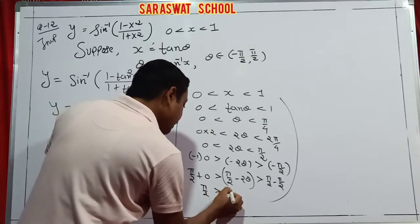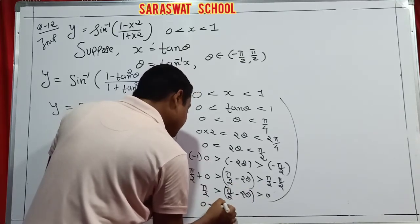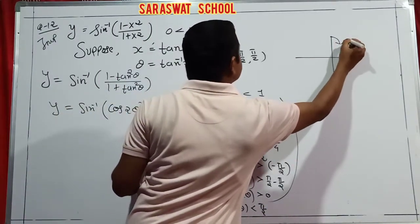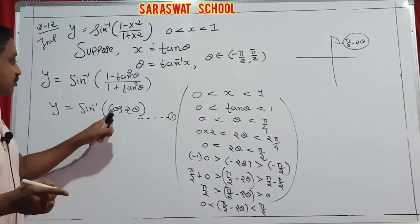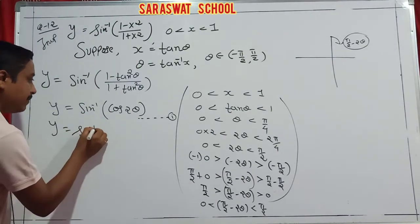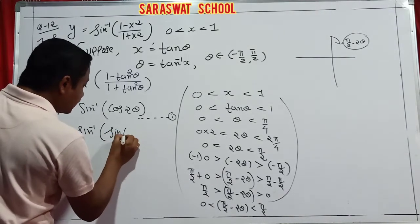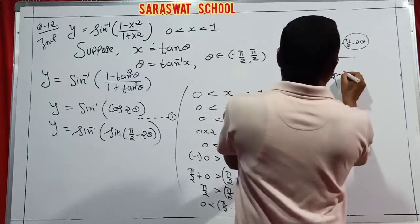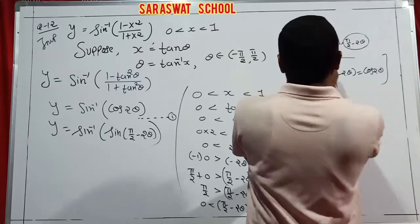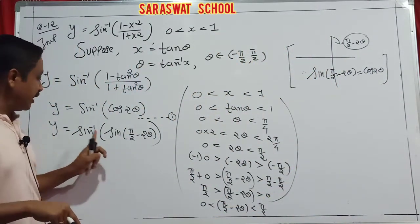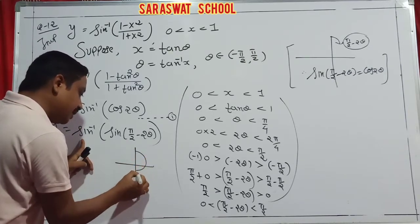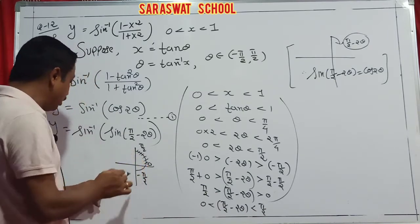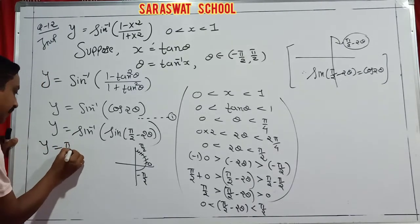Adding π/2 to each term: π/2 - π/2 < π/2 - 2θ < π/2 - 0, which gives 0 < π/2 - 2θ < π/2. This is in the first quadrant, which belongs to the range of sin⁻¹ (which is -π/2 to π/2). So I can write sin⁻¹(cos 2θ) = sin⁻¹(sin(π/2 - 2θ)) = π/2 - 2θ, since sin(90° - 2θ) = cos 2θ. So y = π/2 - 2θ = π/2 - 2tan⁻¹x.